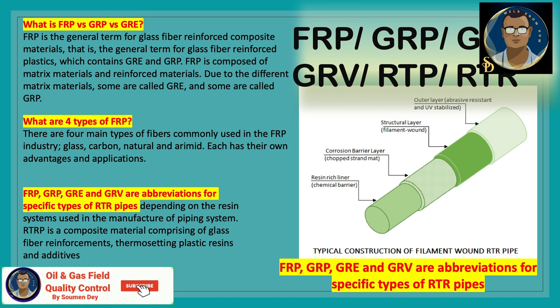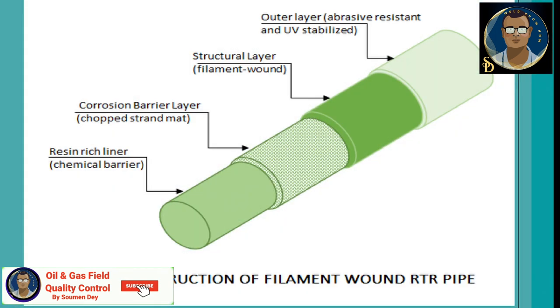There are four main types of fibers commonly used in the FRP industry: glass fiber, carbon fiber, natural fiber, and aramid. Each has its own advantages and applications. GRE and GRP are abbreviations for specific types of RTR pipes depending on the resin system used. RTRP is a composite material comprising glass fiber reinforcement, thermosetting plastic resins, and additives.